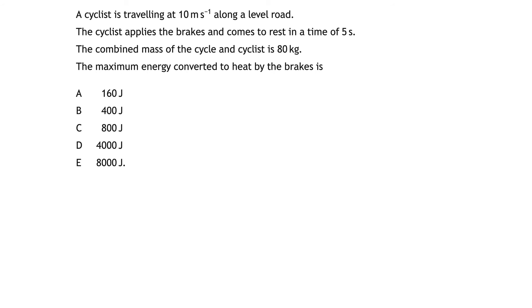A cyclist is traveling at 10 meters per second along a level road. The cyclist applies the brakes and comes to rest in a time of five seconds. The combined mass of the cycle and the cyclist is 80 kilograms. The maximum energy converted to heat by the brakes is. So this is basically a conservation of energy question where one form of energy is transformed or converted to another form. In this case the cyclist with their bike have kinetic energy initially. When they apply the brakes work is done against friction and this will also be equal to the maximum energy converted to heat.